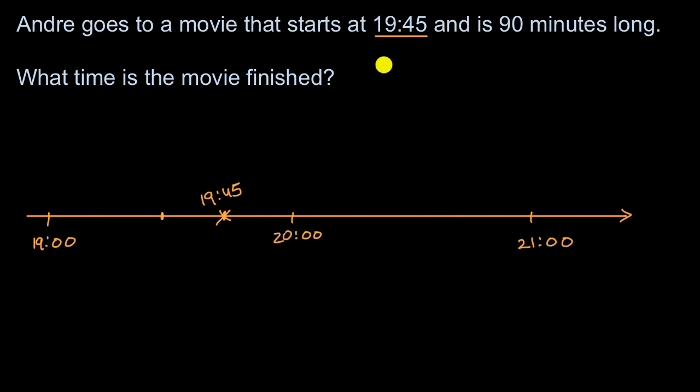Now it's going to continue for 90 minutes. So when does it end? So there's a couple of ways you could think about it. The way I think about it is, it will take us 15 minutes to get to 20 hours. So that's 15 minutes. And so 15 minutes of the movie has happened by 20 hours, and then how much is left?